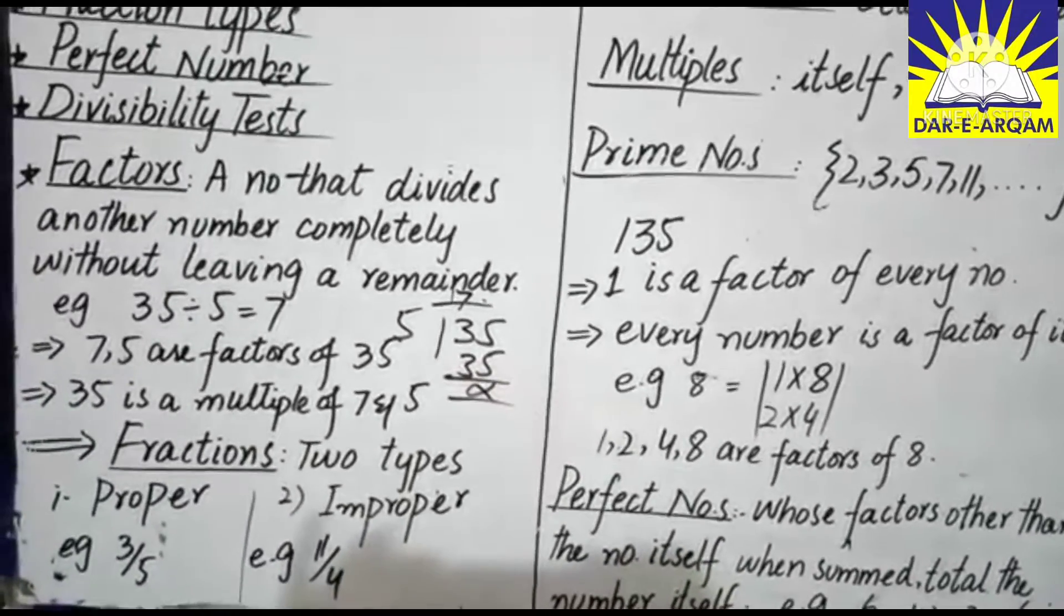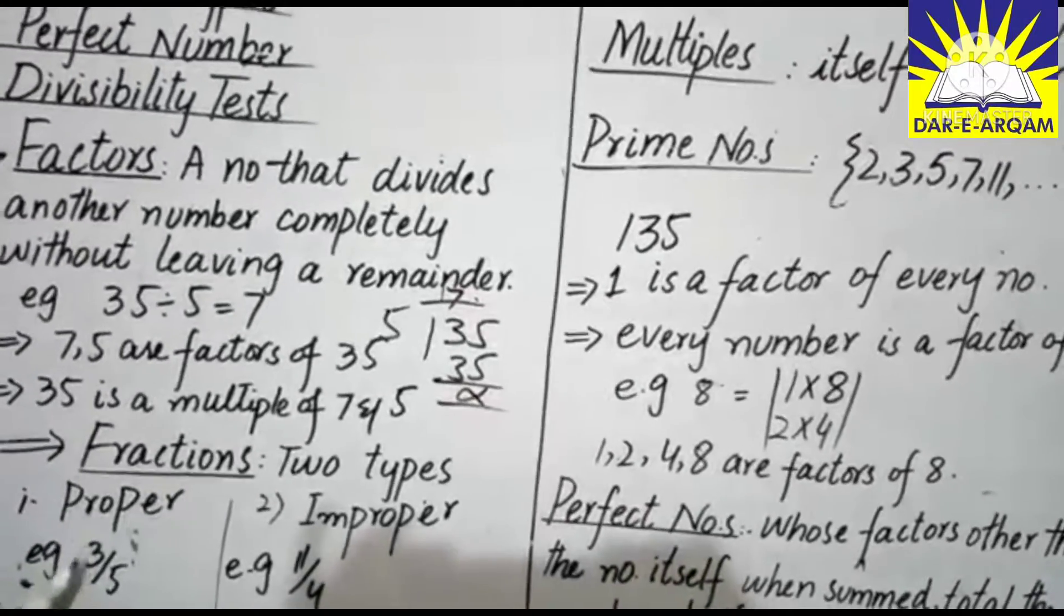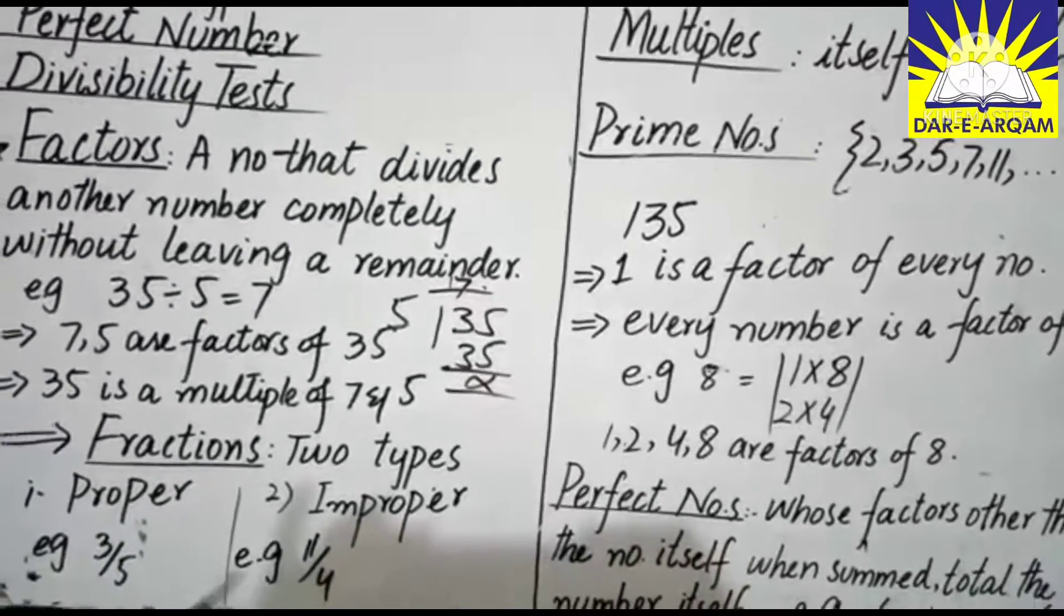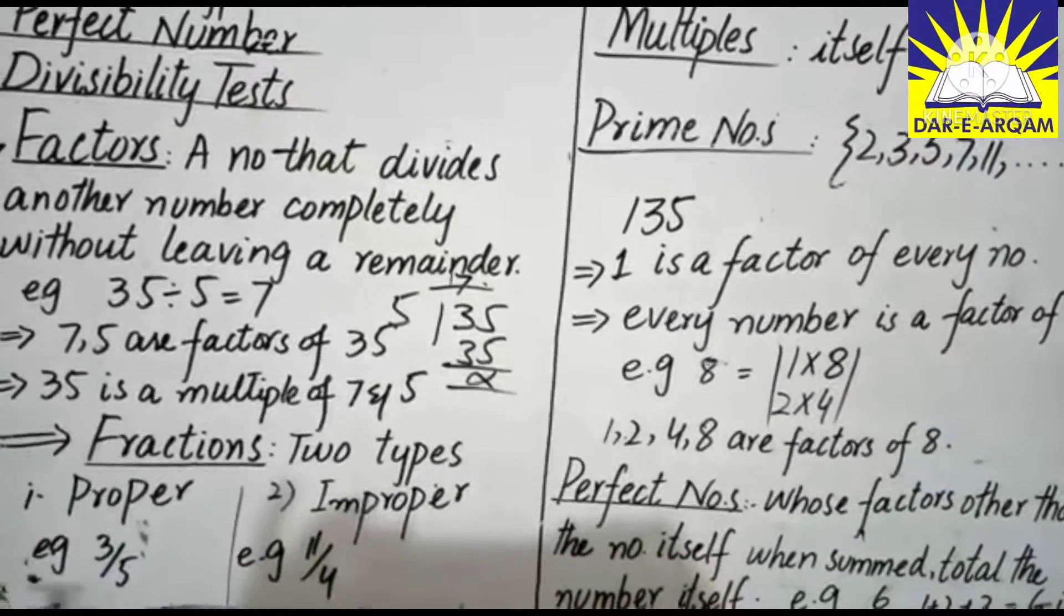Fractions are two types: one is proper and the other is improper. In proper fractions, the numerator is smaller, and in improper fractions, the numerator is greater as compared to denominator.